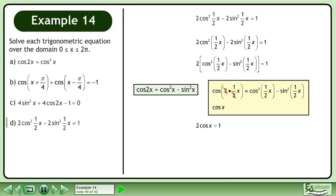We now have 2cosx equals 1. Divide both sides by 2 to get cosx equals one half. The solution is x equals π over 3 and 5π over 3.